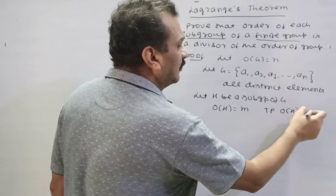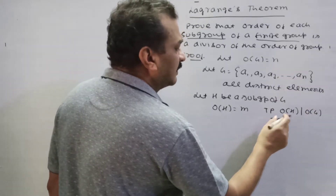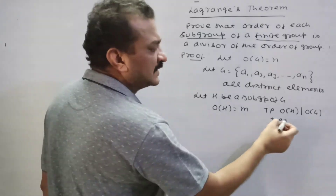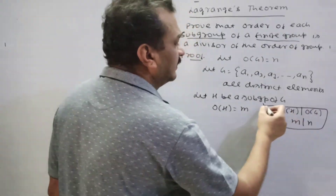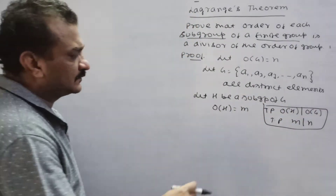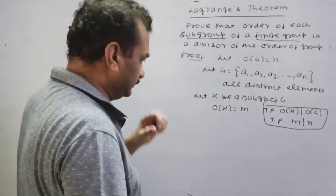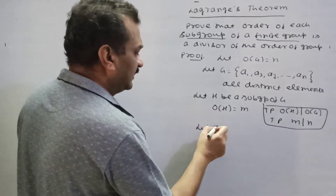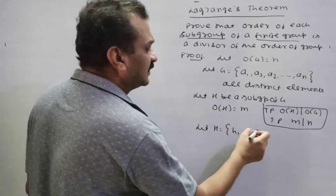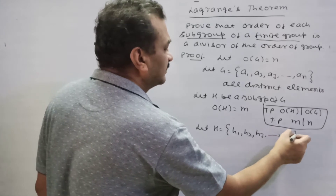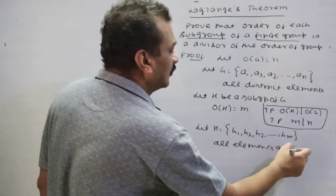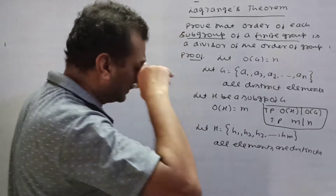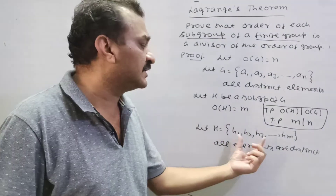What should we prove? We should prove that m divides n. Let H have elements h1, h2, h3 up to hm — all distinct elements — because the order of H is m, meaning m different elements.